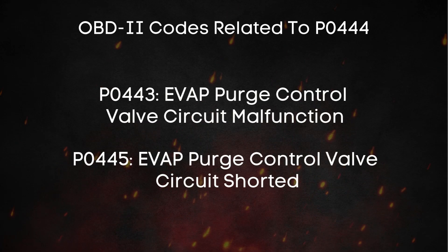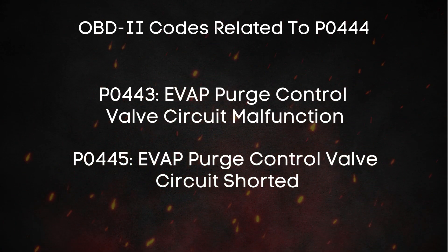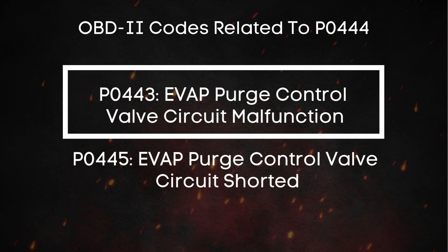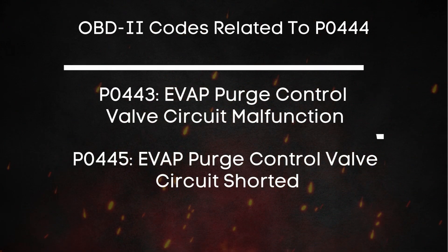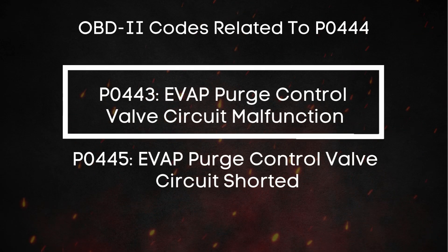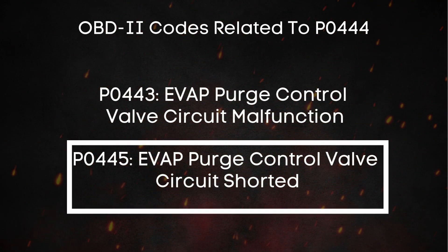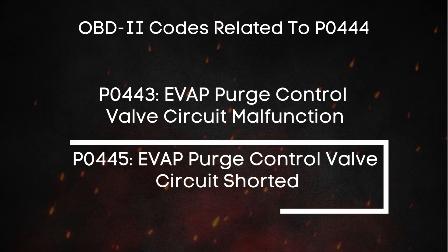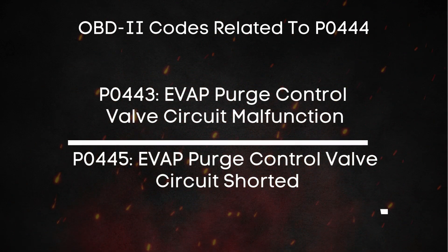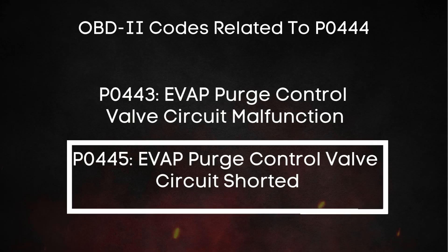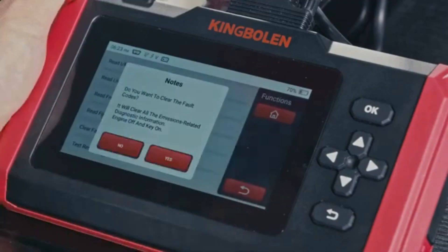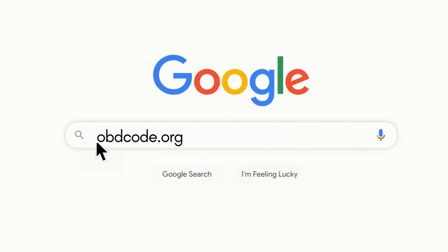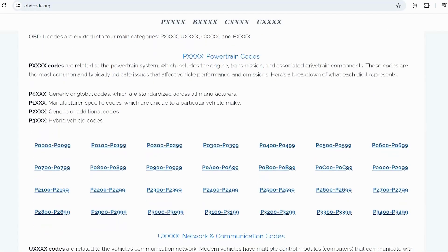Just like P0444, you might also run into other trouble codes related to the EVAP system. For example, P0443 points to an EVAP purge control valve circuit malfunction, meaning there's some kind of issue in the circuit preventing the valve from working properly. On the other hand, P0445 means EVAP purge control valve circuit shorted, suggesting an unintended connection somewhere in the wiring possibly causing a short circuit. You can visit obdcode.org for a full list of codes and their meanings.